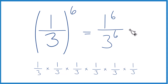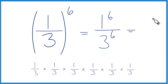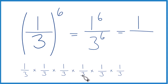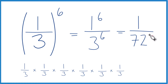One to the sixth is just one. And three to the sixth: three times three is nine, nine times three is twenty-seven, twenty-seven times three is eighty-one, eighty-one times three is two-forty-three, and two-forty-three times three is seven-twenty-nine.